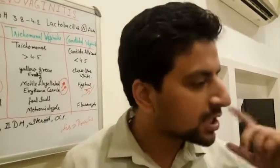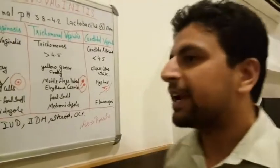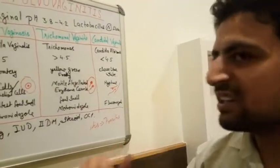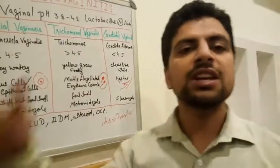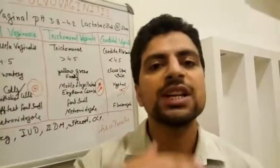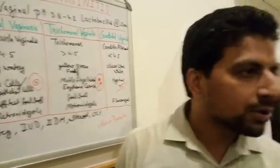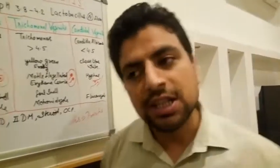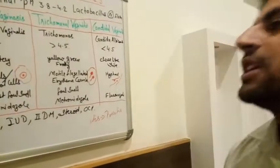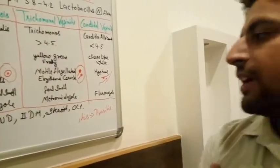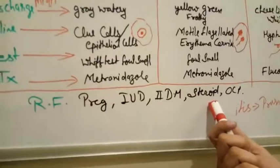Risk factors for vulvovaginitis include pregnancy — because it is an immunocompromised state — IUDs (intrauterine devices), diabetes mellitus, oral contraceptive pills, and steroids, because they are all immunosuppressants.